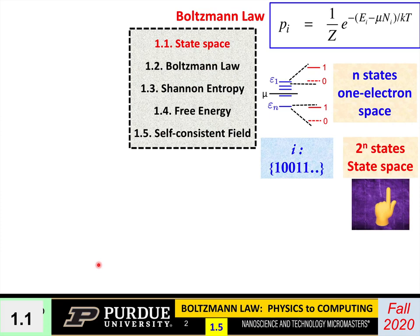We started in Lecture 1 by introducing this key difference between the one-electron space and the state space. Usually we always draw this one-electron space. But if you have n states here, in state space you have like 2 to the power n states, which can be labeled with binary numbers like this, where each digit tells you whether one of these is occupied or empty. It's very important to be clear about which space we are talking about — n space or the 2 to the power n space. And Boltzmann's Law, the central law of equilibrium statistical mechanics, is actually stated in the state space.